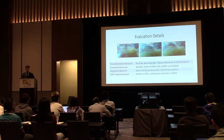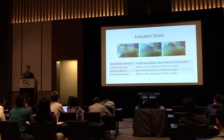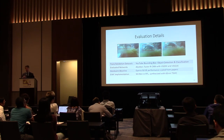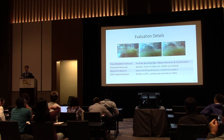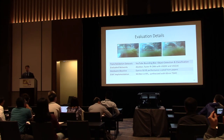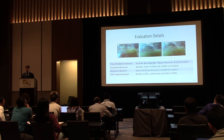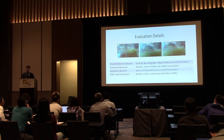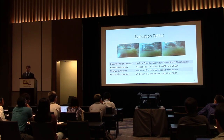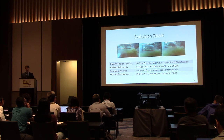For evaluation, we used real data — YouTube Bounty Box, a dataset of YouTube videos that is five times the size of ImageNet, with both object detection and classification datasets. We used AlexNet and Faster RCNN with VGGM and VGG16. These are direct comparisons to IRIS and EIE, and our technique can be applied to other networks as well. The hardware baseline is IRIS and EIE, and our new hardware was written in RTL and synthesized in 65 nanometer TSMC, with all IRIS and EIE numbers scaled appropriately.